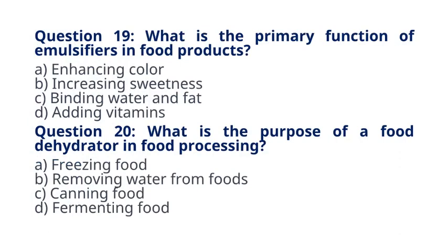Question 19. What is the primary function of emulsifiers in food products? A. Enhancing color B. Increasing sweetness C. Binding water and fat D. Adding vitamins. The correct answer to question 19 is option C. Binding water and fat. Explanation: emulsifiers help create stable emulsions by binding water and fat together, preventing separation in various food products.